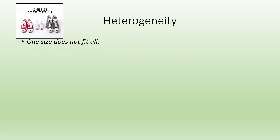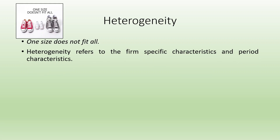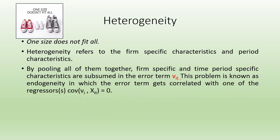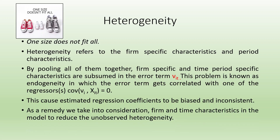Why is it necessary to have a fixed effects model? The reason is one size does not fit all. When we run pooled OLS, we run a single regression. Heterogeneity here refers to firm-specific characteristics and period characteristics. The regression equation in pooled OLS may differ according to the firm or the time element. By pooling all together, firm-specific and time period specific characteristics are subsumed in the error term V_it. This problem is known as endogeneity, where the error term gets correlated with one of the regressors, causing estimated regression coefficients to be biased and inconsistent. As a remedy, we take into consideration firm and time characteristics in the model to reduce unobserved heterogeneity.